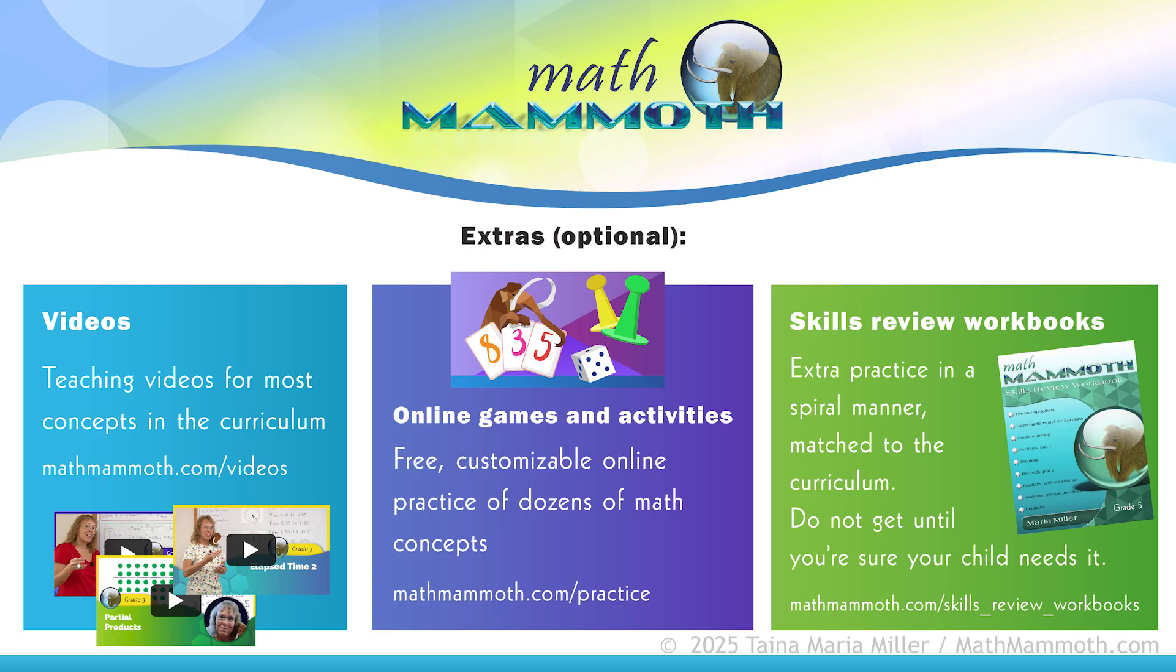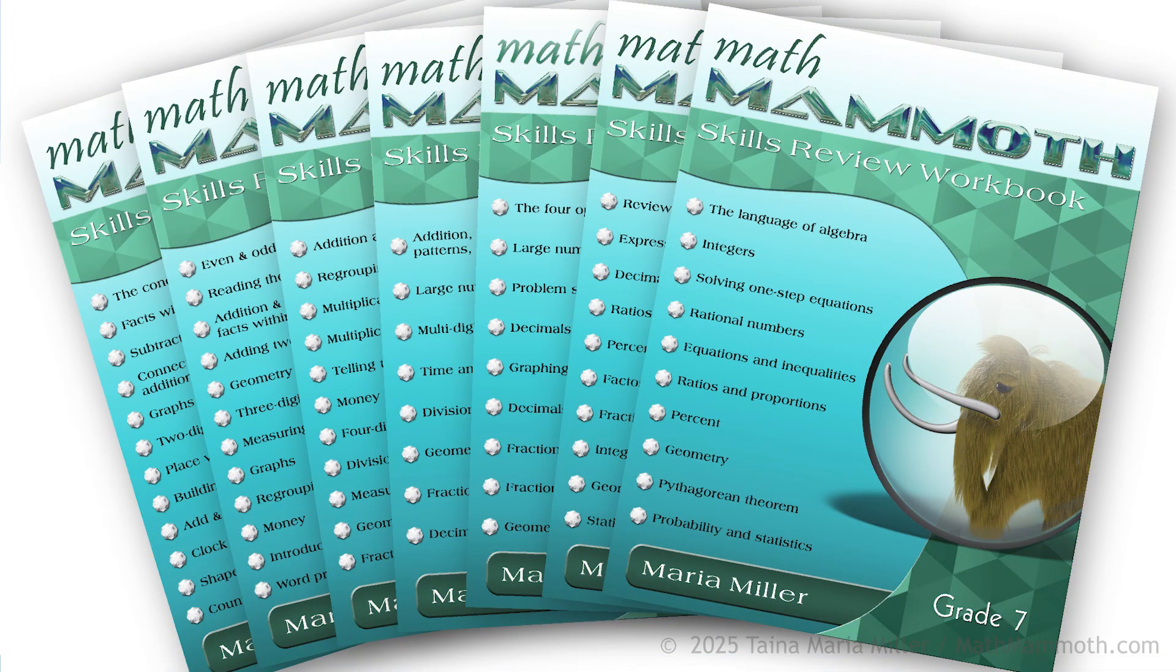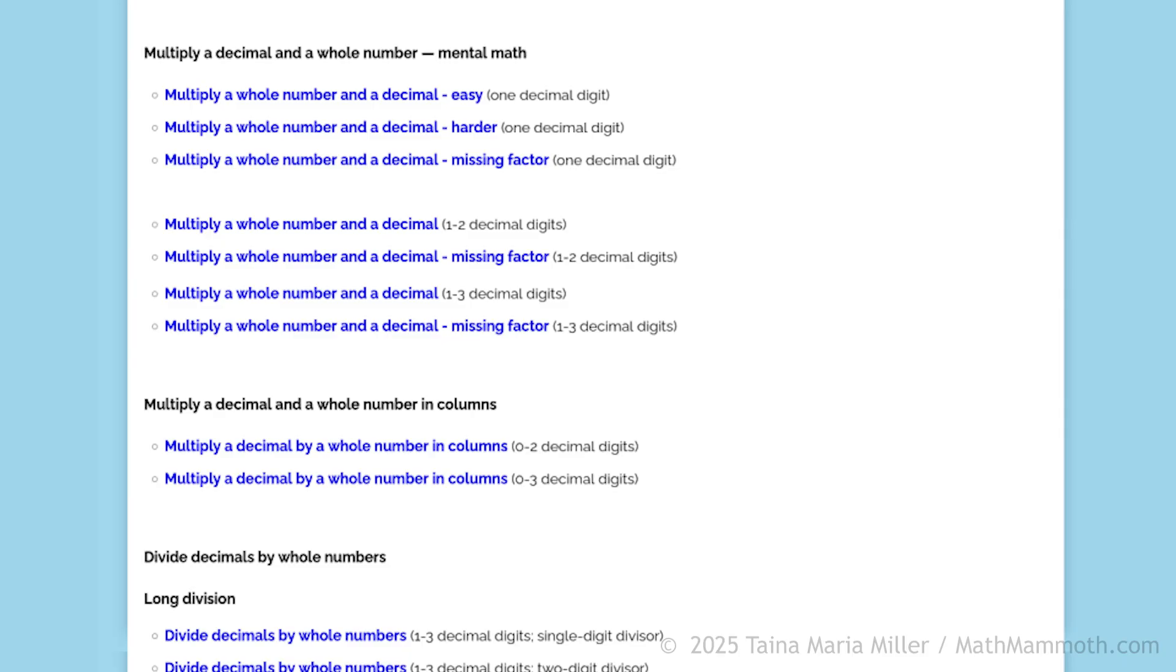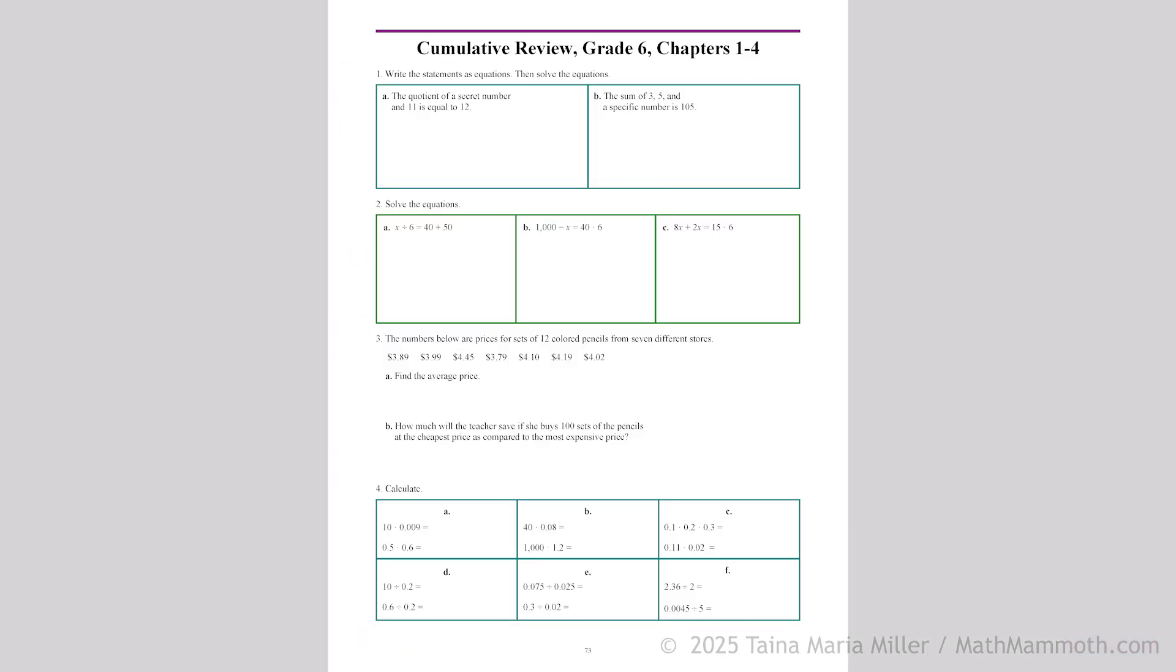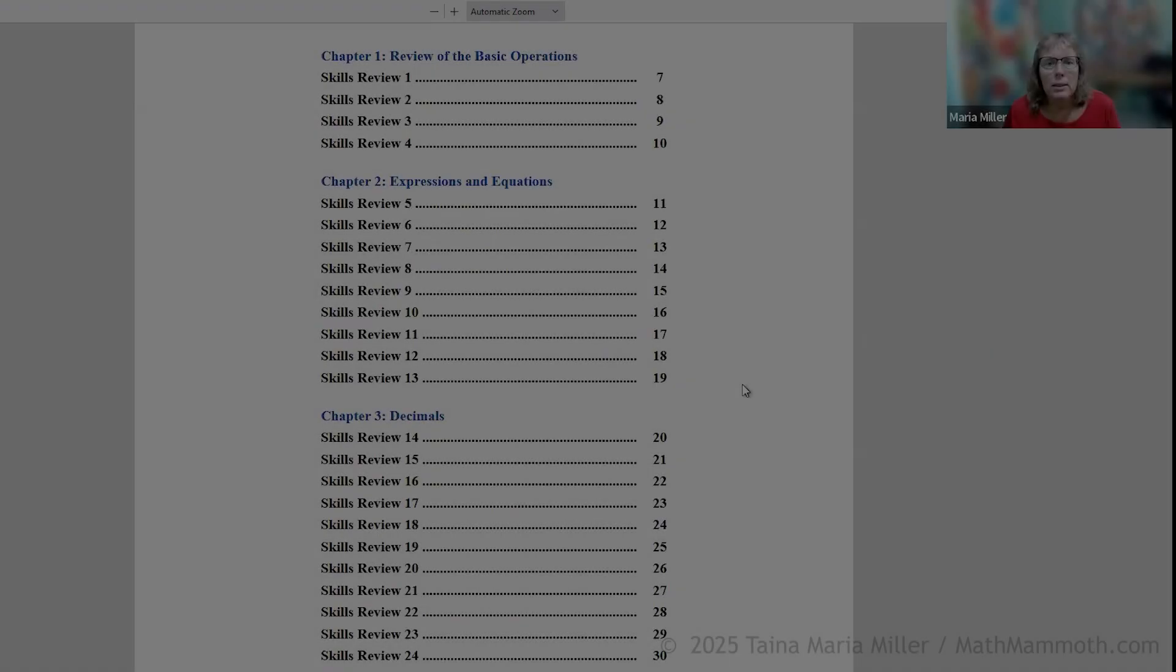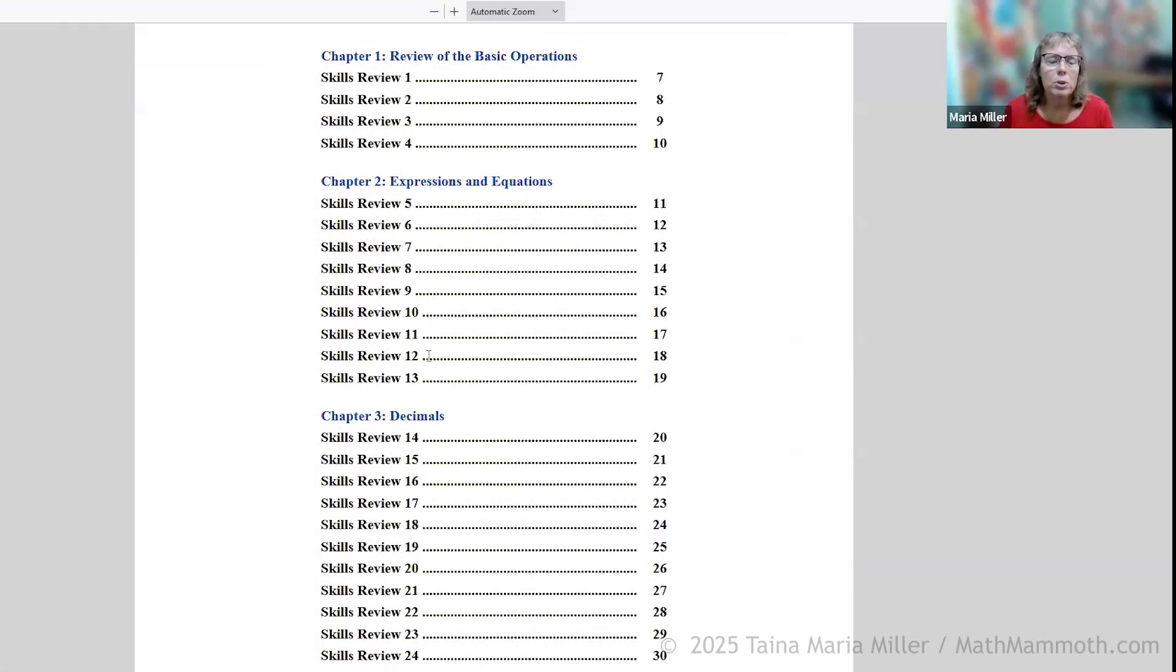We have one other extra optional thing. Skills review workbooks. Extra practice in a spiral manner matched to the curriculum. Do not get these until you're sure that your child needs extra practice. I showed you already several different things that provide extra practice that come with the curriculum. There was the worksheet maker. There was mixed reviews and cumulative reviews.